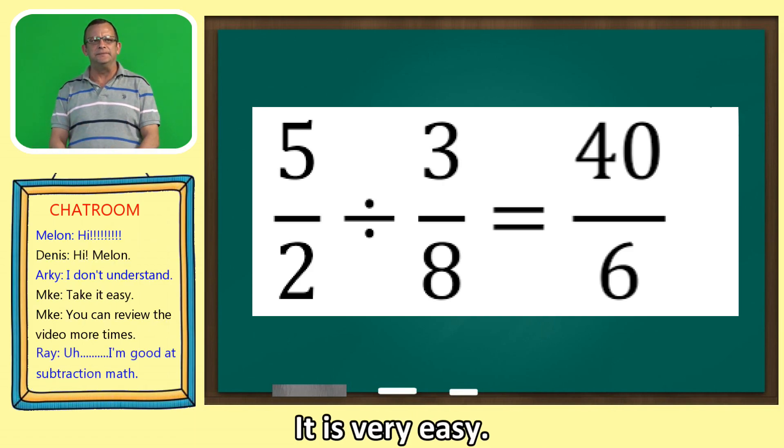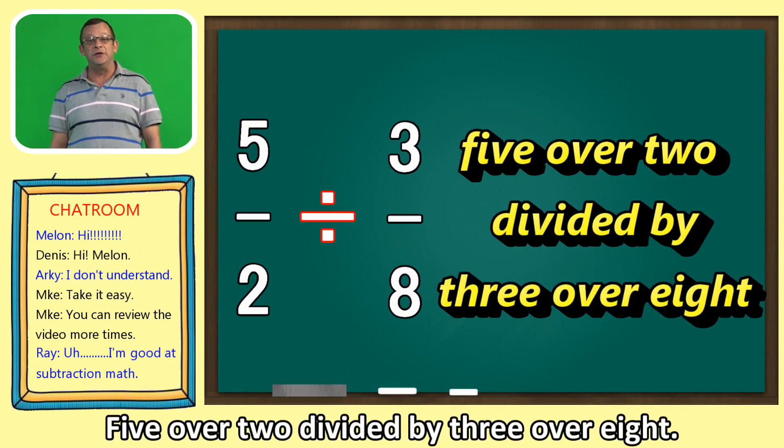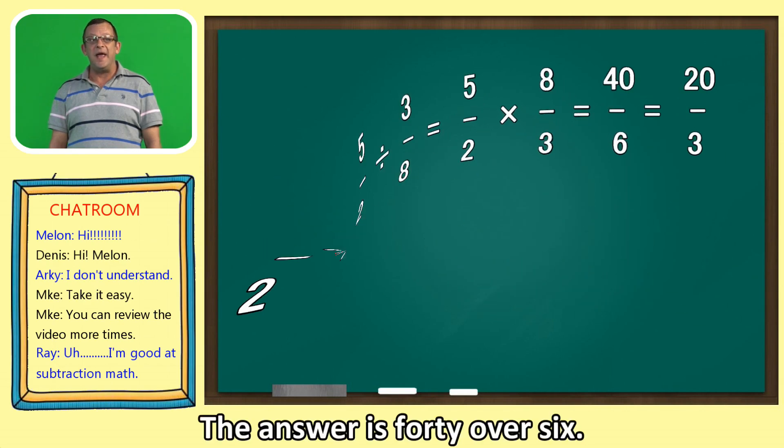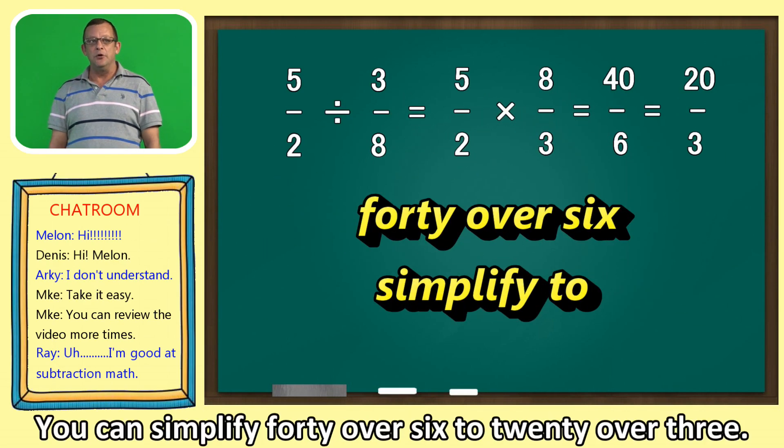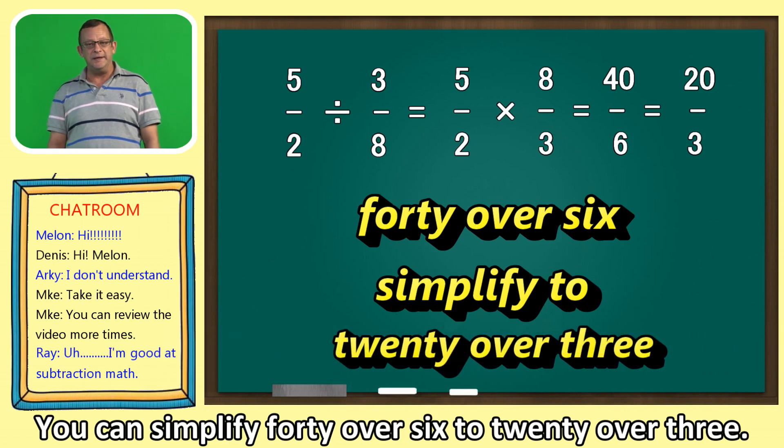It's very easy. 5 over 2 divided by 3 over 8. The answer is 40 over 6. You can simplify 40 over 6 to 20 over 3.